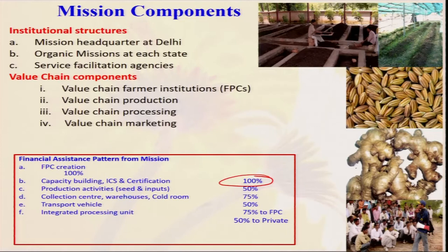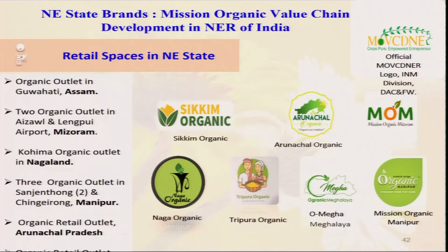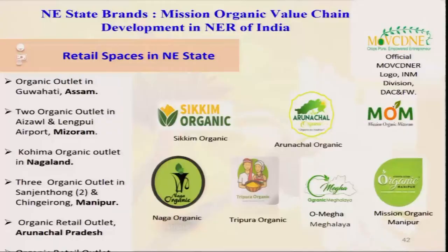Brand value is very much important — whenever you go for a particular organic product from any state, the brand value matters. Under organic promotion in different states, brands are being promoted: Sikkim Organic, where getting that brand immediately tells the consumer the whole state is organic, so there is no question about certification. Farmers can easily sell at a better price. We have also started Arunachal Organic, Naga Organic, Tripura Organic, Organic Meghalaya (O-Megha), and Mission Organic Manipur. Although the organic area in other states is still small at this time, within 5 to 10 years there is a tremendous scope to enhance total production and make this region an organic hub.